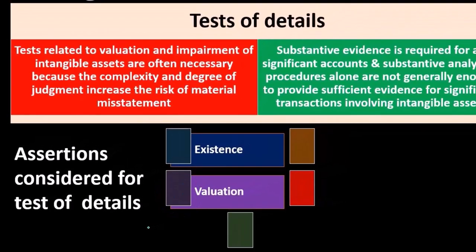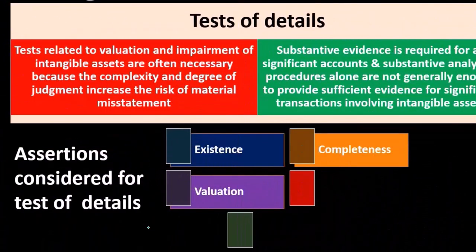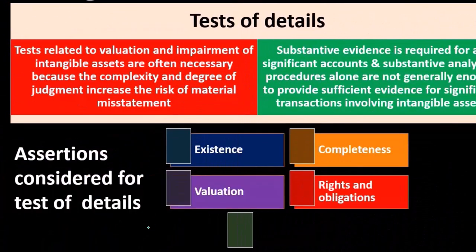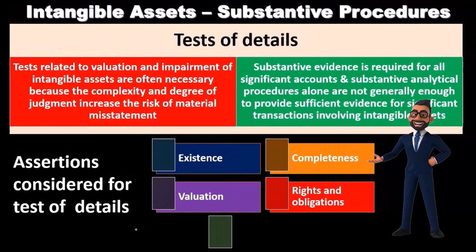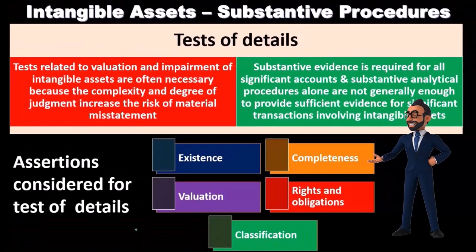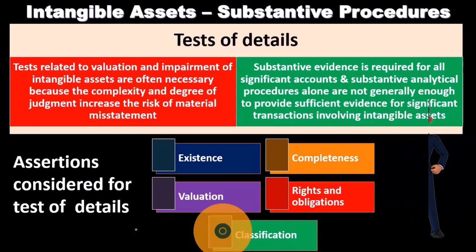Intangible assets are oftentimes somewhat unique. If we're talking about book rights, copyrights, movie rights, or goodwill tied to one particular type of company, then we're concerned with the valuation and completeness. We also consider rights and obligations — whether the assets actually belong to the company, especially where there are legal rights related to things like goodwill or copyrights — and we want to make sure the company has legal rights to them. And then of course, classification.